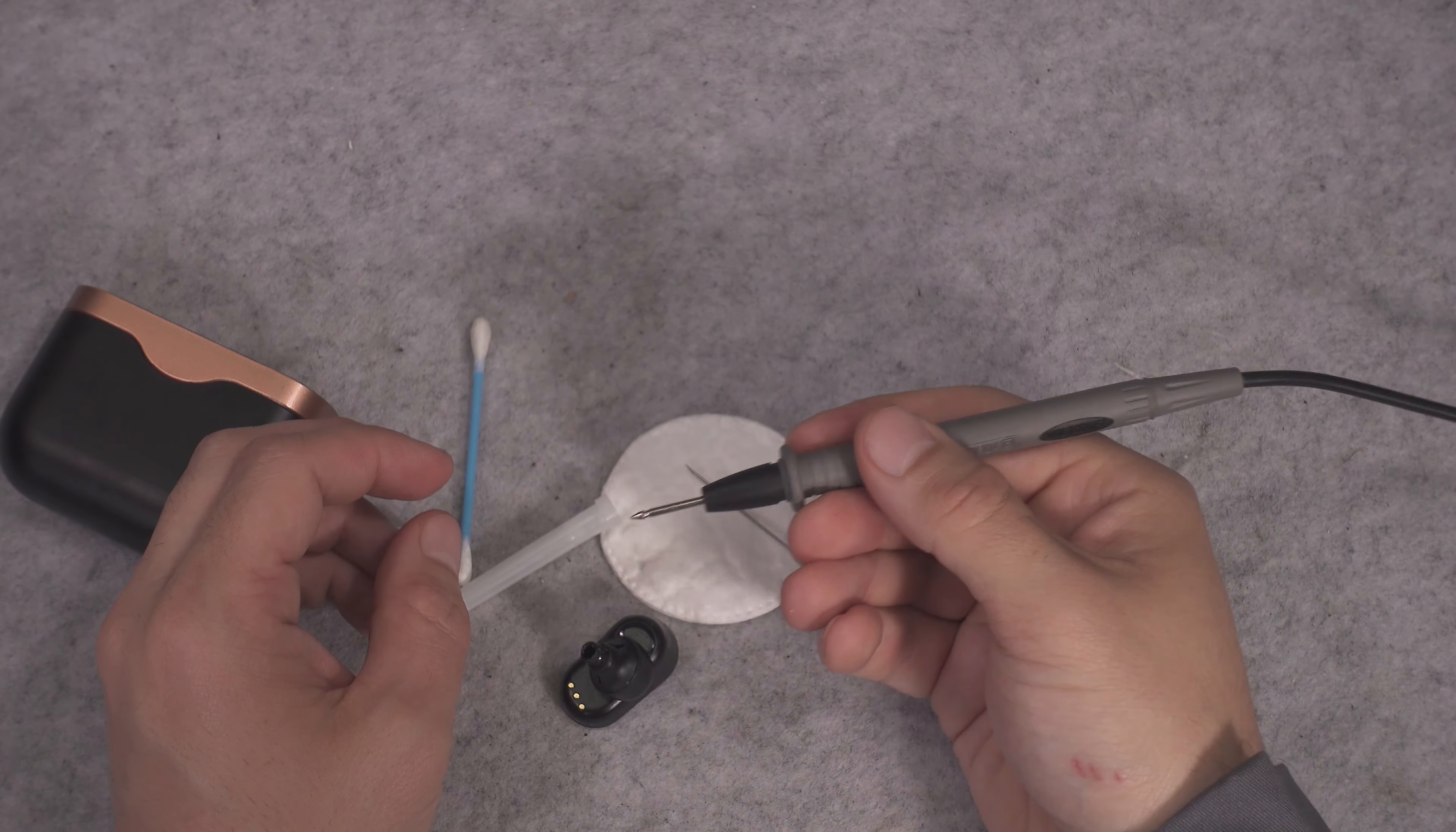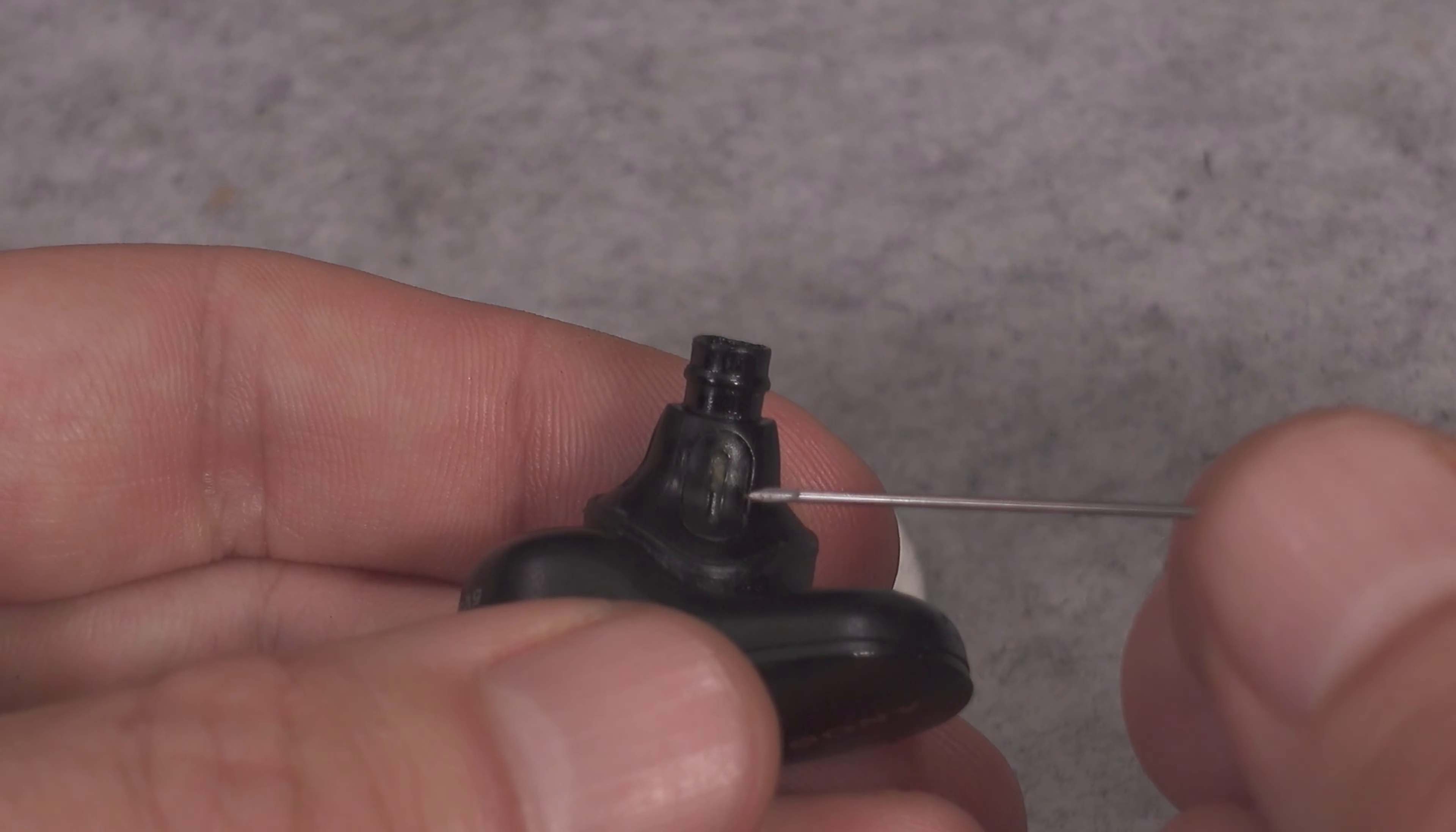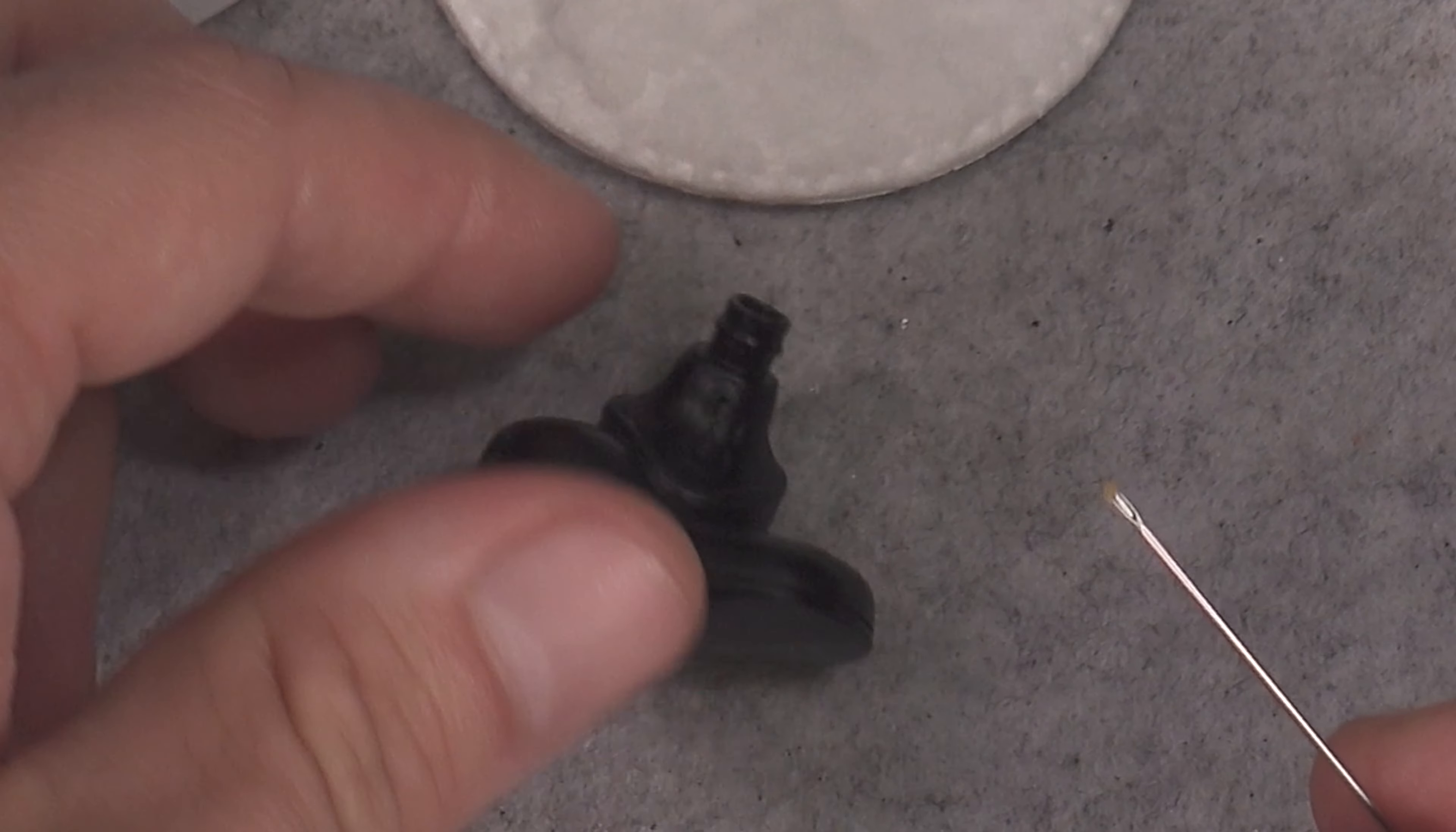If you hold your earbud like this, here you are going to find a cutout and a tiny amount of earwax that is blocking tiny holes. So you are going to grab your needle, or anything pointy, and you are going to remove the earwax like this. It looks gross, but do not worry, it is just earwax.